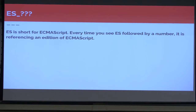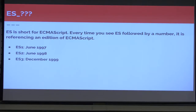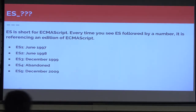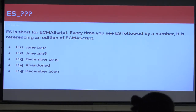ES is short for ECMAScript. Every time you see ES followed by a number, it's referencing an edition of the ECMAScript. So ES1 in 1997, ES2 in 1998, ES3 in 1999. ES4 was actually abandoned. Then we finally got ES5, and this is what everyone is probably familiar with — what we had for years and years. It came out in December of 2009.